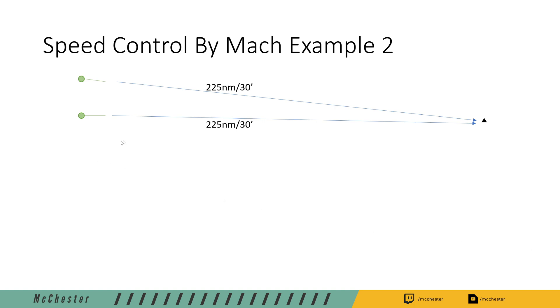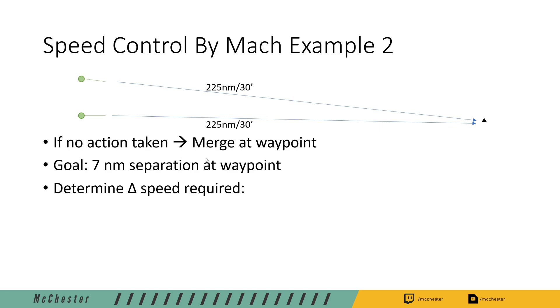With the second example we have a similar situation but the time constraint is more pressing. We only have 30 minutes left in order to achieve the required separation, and if we take no action we're gonna have a merge at the waypoint once again. The goal this time is 7 nautical miles and we need to determine the speed difference required to achieve the 7 nautical mile separation at the waypoint.